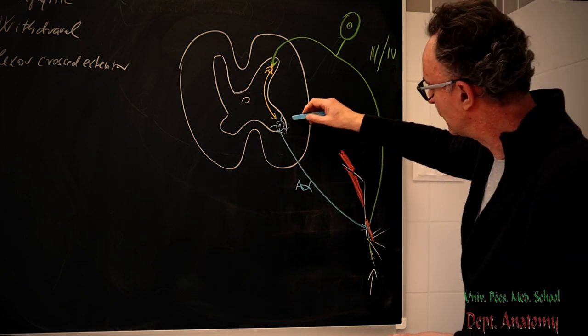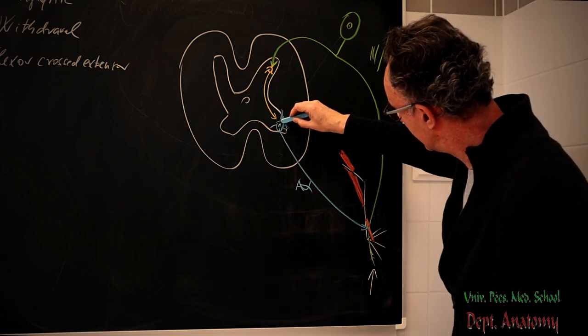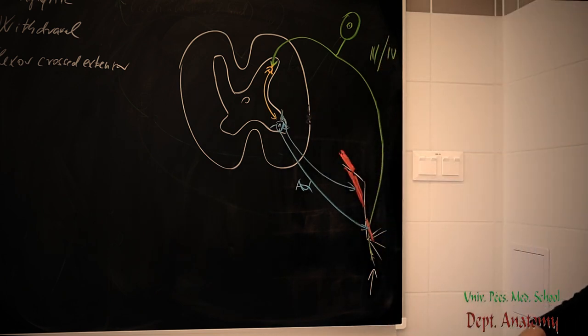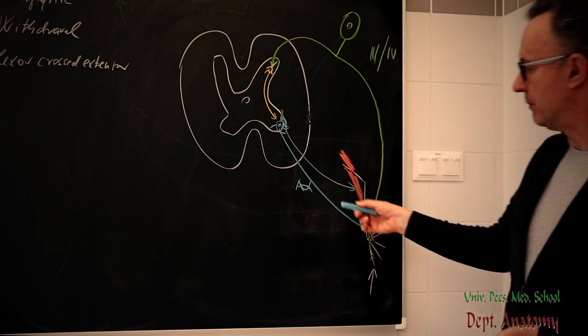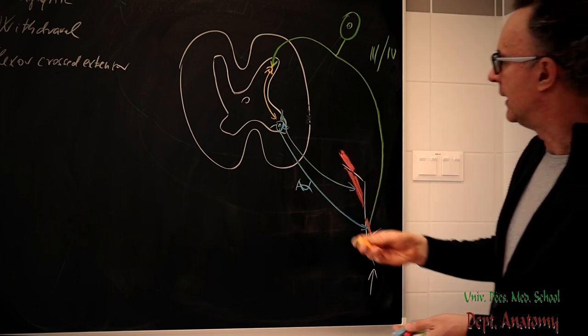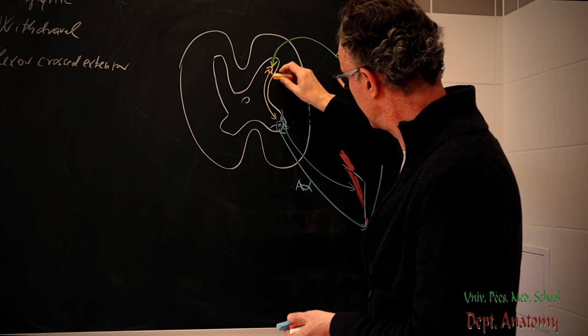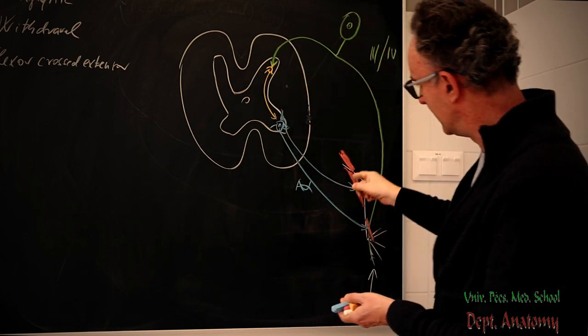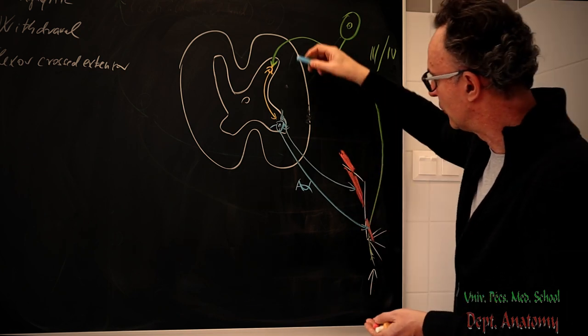Simultaneously, we have to activate the other flexors, as I told you. And it can be a few segments above. In this case, we use collaterals. And I don't mention this now. I don't want to add to my drawing. But these flexors are also activated from above.